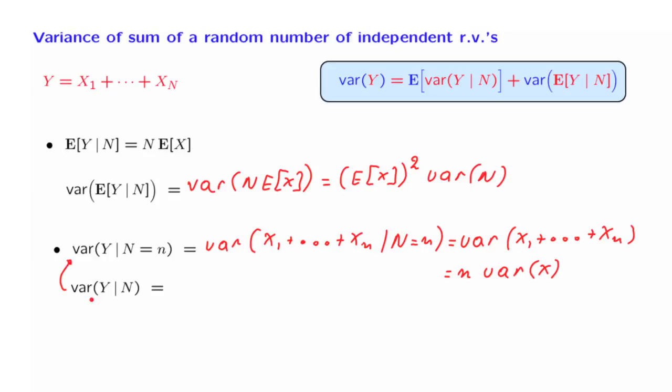So this is a random variable that takes this specific value when capital N is equal to little n, but this is also the same as this random variable, N times the variance of X, because this random variable takes this particular numerical value when capital N is equal to little n.